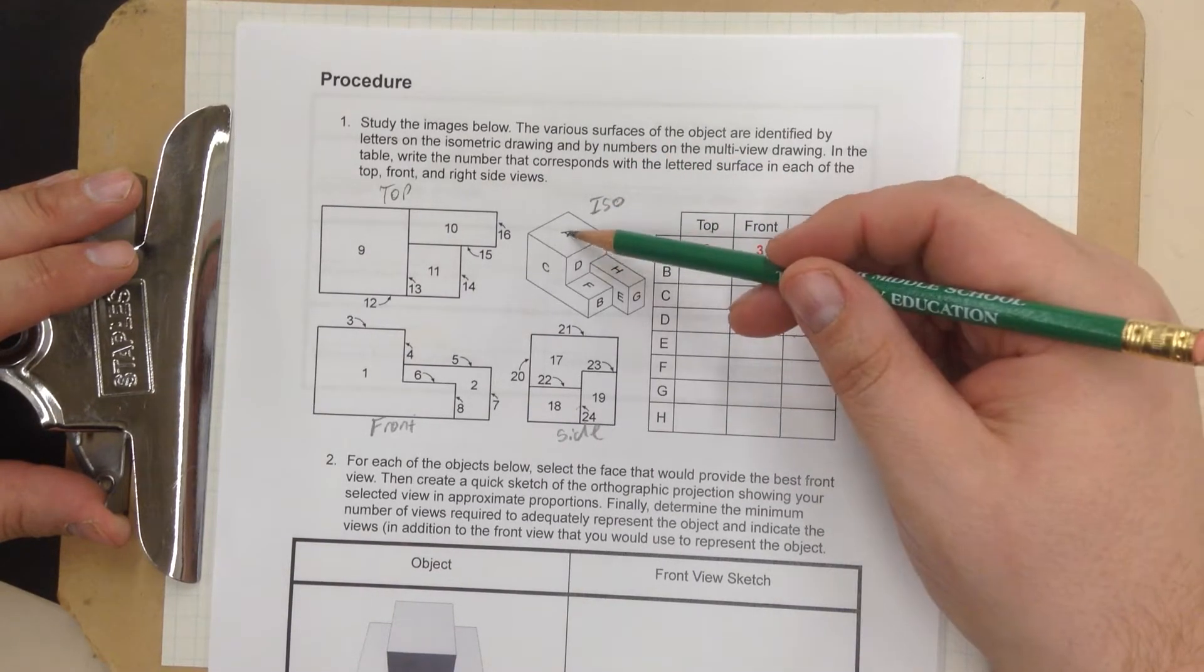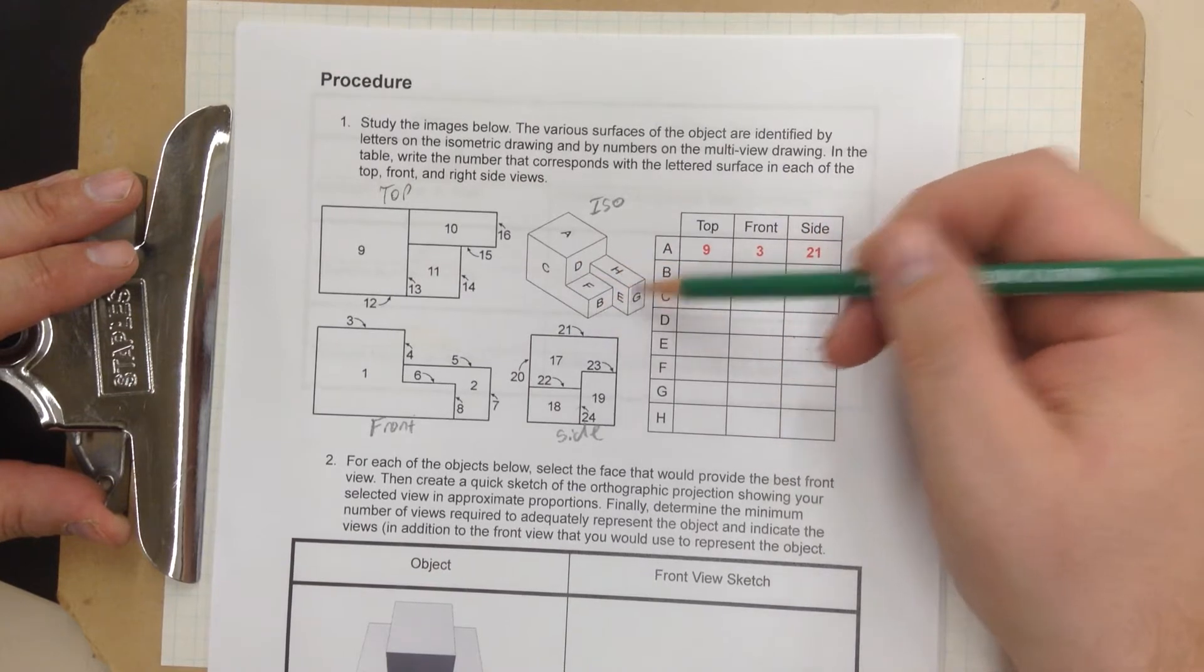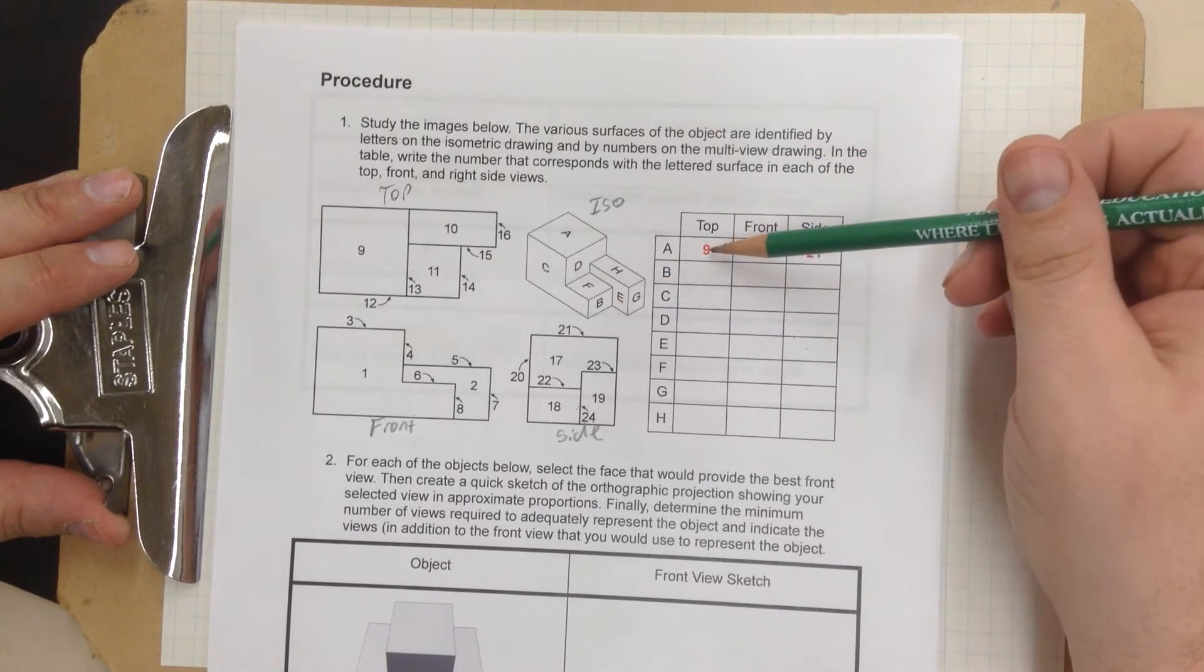Now let's break this down play by play. So let's look at the ISO, and it's got letters right here. And you'll see top, front, side, and they did an example.